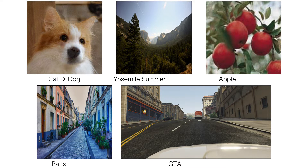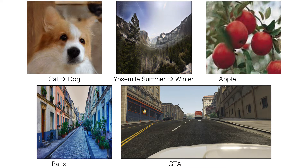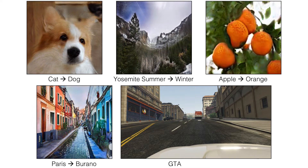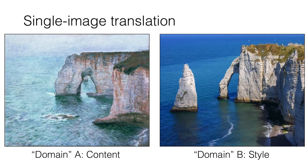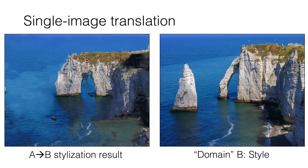Here we show some results on various unpaired image-to-image translation tasks. Additionally, our method can be run when each domain is a single image, for example translating a painting to a photo.